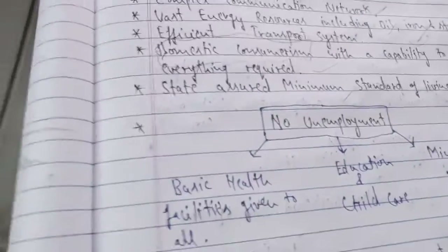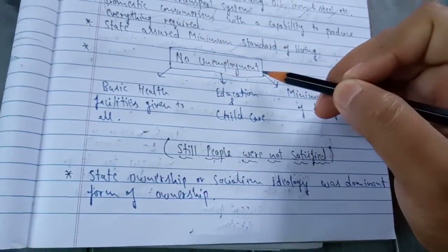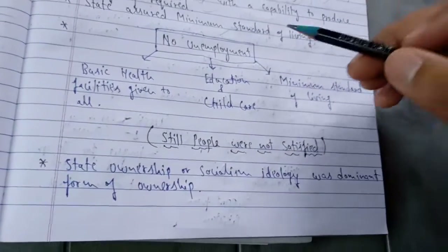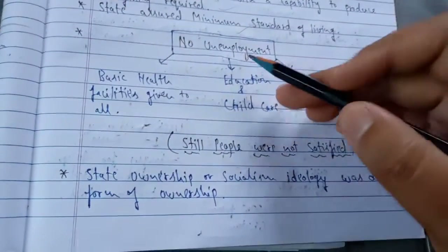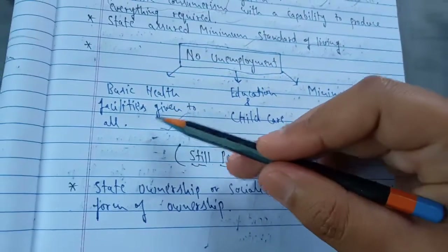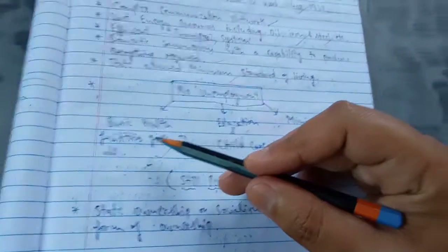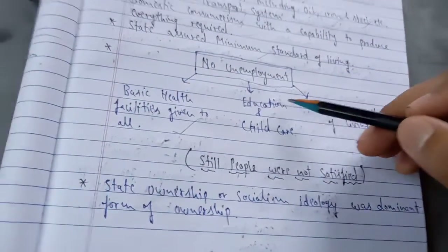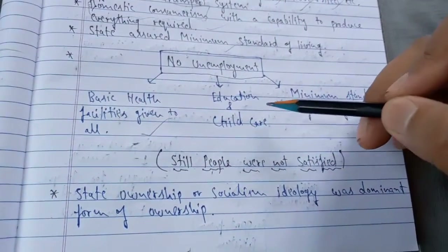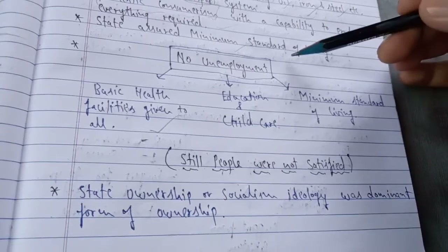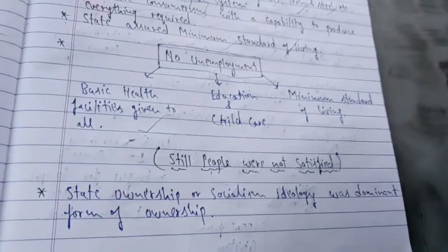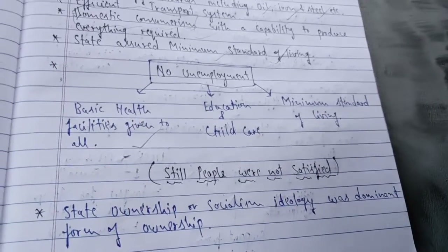This led to a very good economic state. The USSR, following communism and socialism, assured a minimum standard of living for all citizens. No one was too rich and no one was too poor — everyone got the basic amenities for a comfortable life. Most importantly, there was no unemployment, unlike in India or other developing countries. Basic health facilities were provided to everyone, along with good education and child care systems covering all citizens of the USSR.